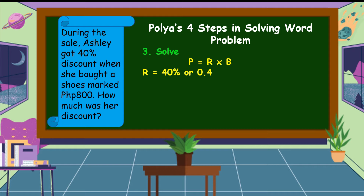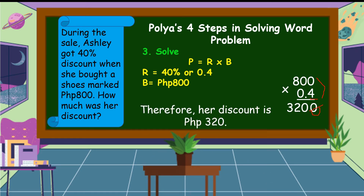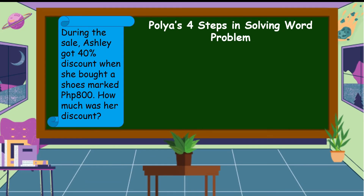Our rate is 40%, or 0.4, and the base is 800 pesos. Let's multiply: 800 times 0.4. We compute: 4 times 0 is 0, 4 times 0 is 0, 4 times 8 is 32. We count one decimal place in our factors, so we move the decimal point one place from right to left, giving us 320. Therefore, her discount is equal to 320 pesos.